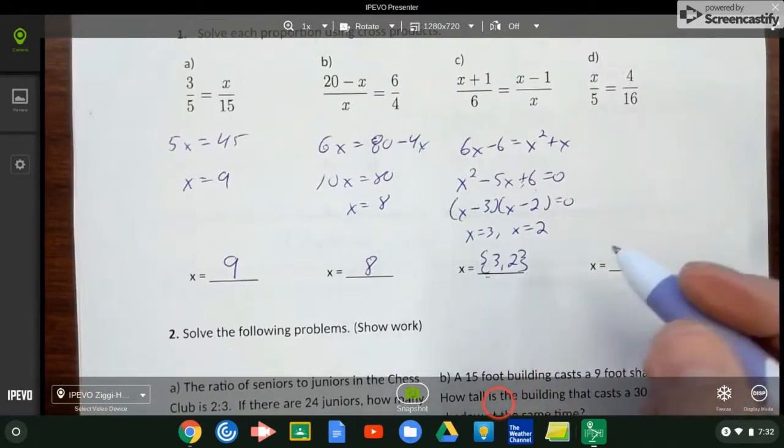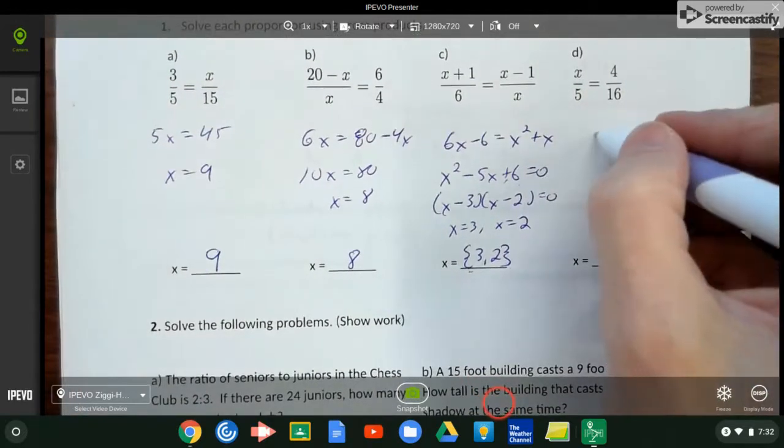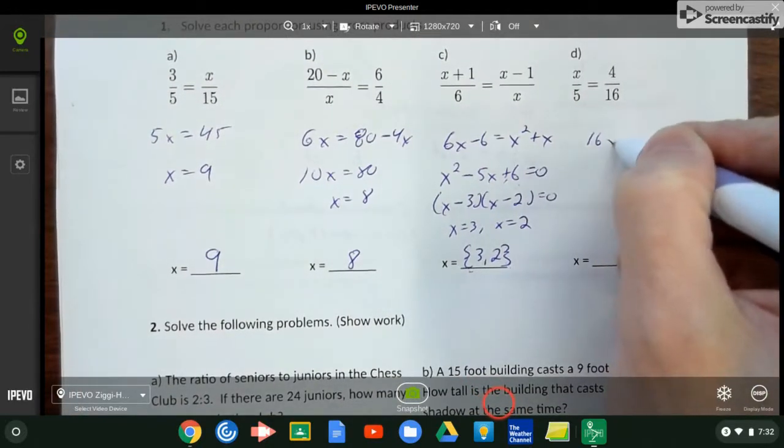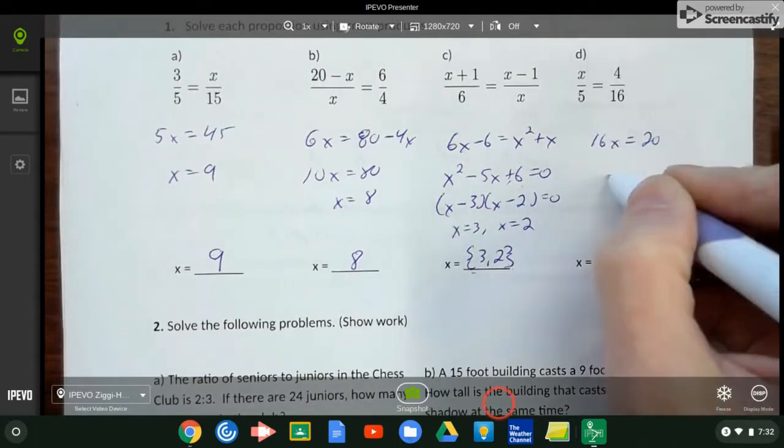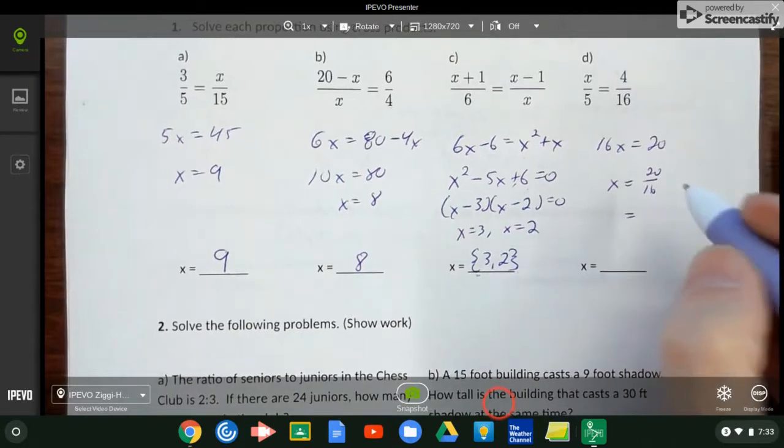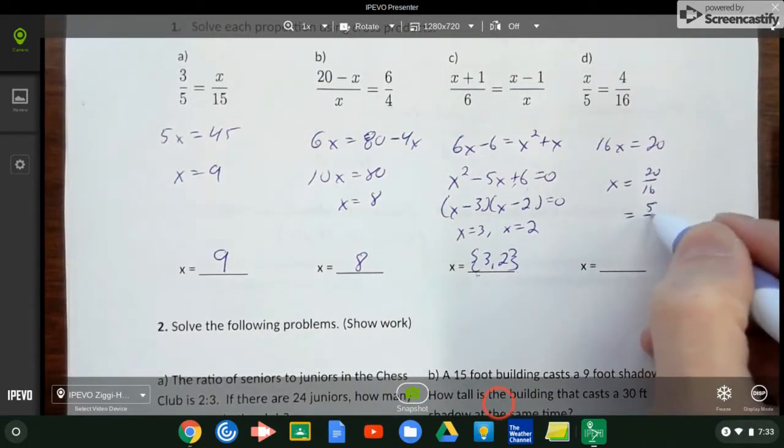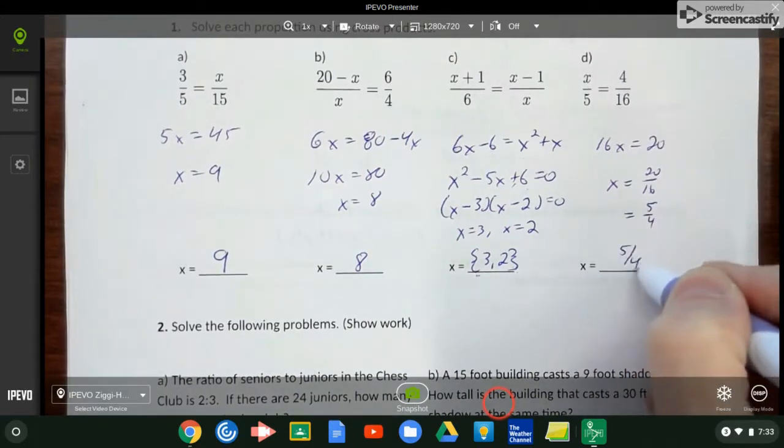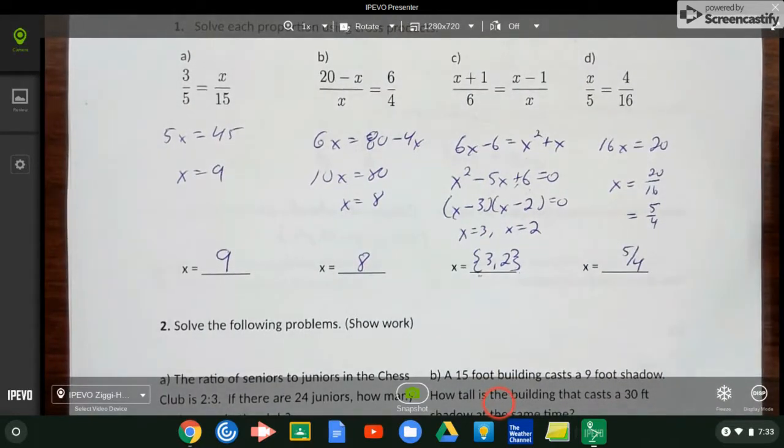If you have multiple solutions, we sometimes do our solution set with these curly brackets. If you didn't do that, that's no big deal. If you just said 3 and 2, I get it. 16x equals 20, so x equals 20 over 16, which we can reduce - divide both by 4 - so 5 over 4.